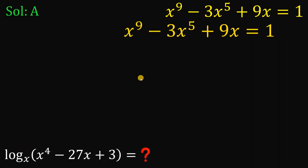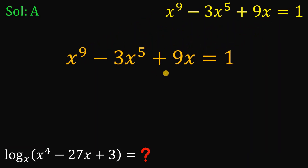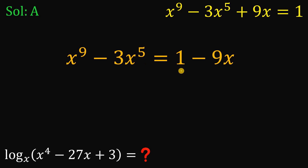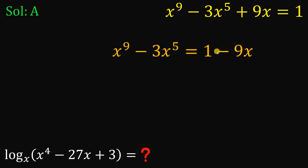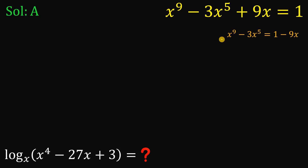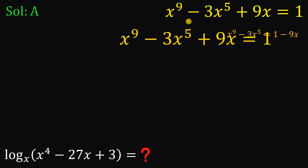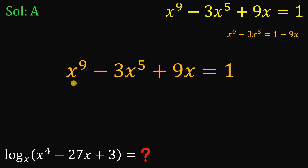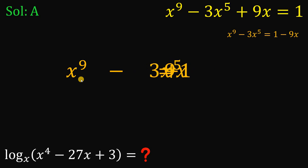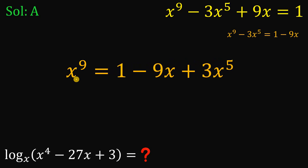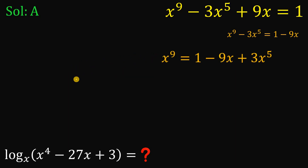For the first solution, let's take the given equation and subtract 9x on both sides. So x raised to the ninth power minus 3x raised to the fifth power equals 1 minus 9x. We will use this equation later on. Let's also rearrange some terms to get the value of x raised to the power of 9, which we will also use later.